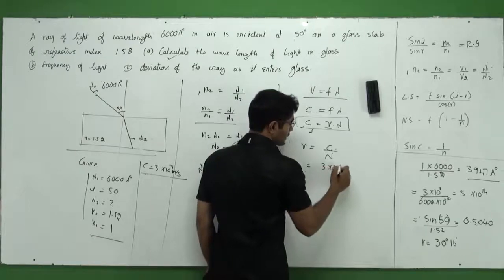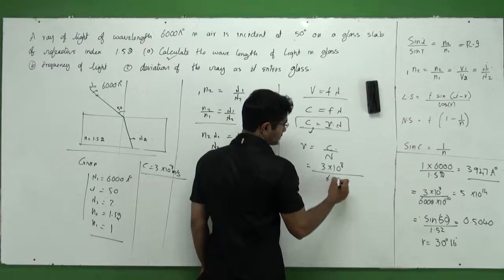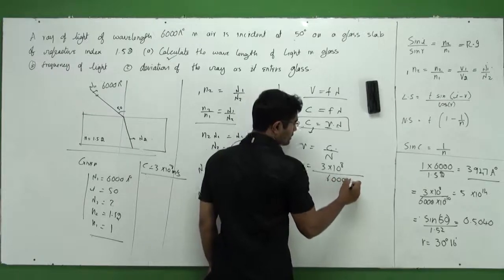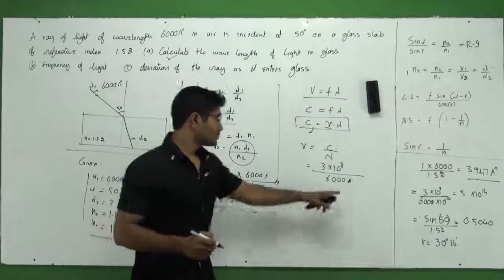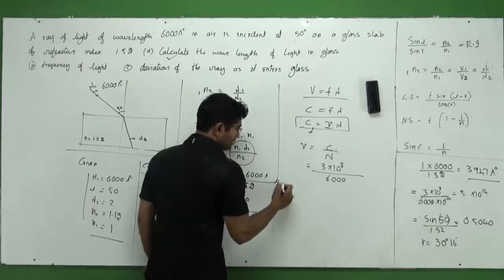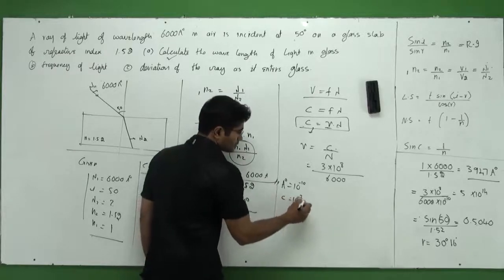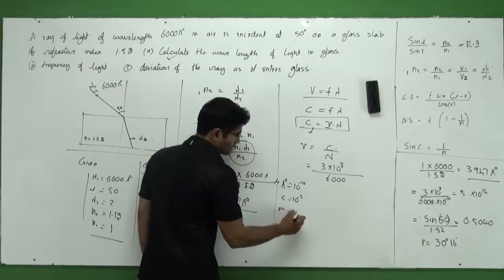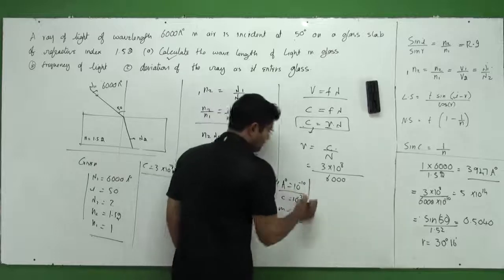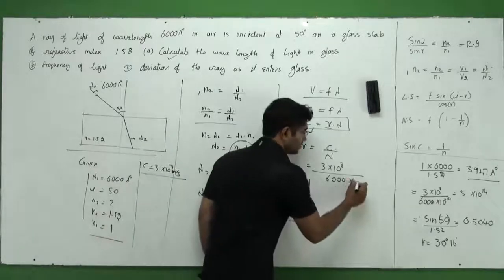I know c is 3 times 10 to the power 8 and lambda 1 would be 6000 Angstrom. And what is Angstrom exactly here? I cannot substitute Angstrom here. I need to write in terms of powers of 10. See I'll tell you what exactly is Angstrom. Angstrom is 10 to the power minus 10. As we know centi is 10 to the power minus 2 and milli is 10 to the power minus 3. Like that, I can say Angstrom is 10 to the power minus 10. So let me substitute here 10 to the power minus 10.